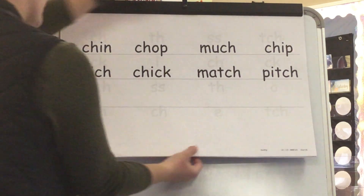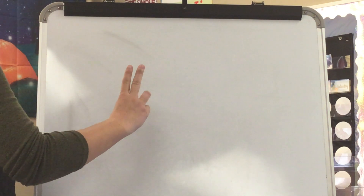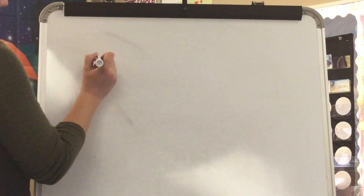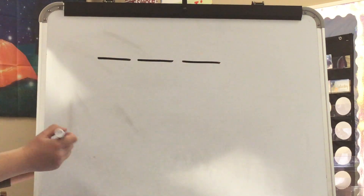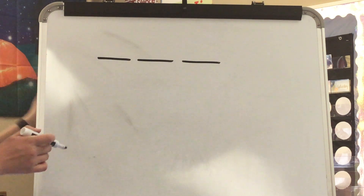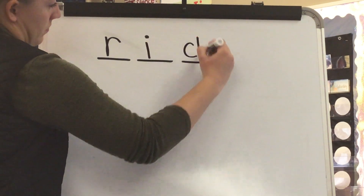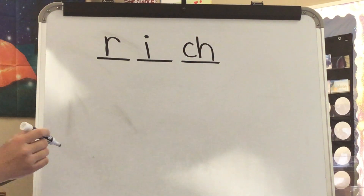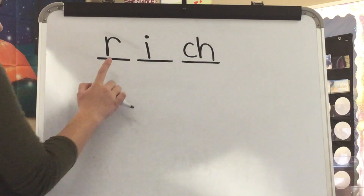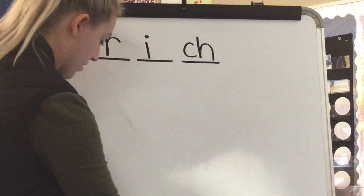Time to stretch and spell some words. Our first word is rich. What word? Rich. Stretch rich. Rich. Stretch rich again. Rich. Write the sound spellings you hear in rich. R-I-C-H. Word. Rich. Yes.